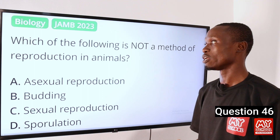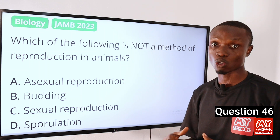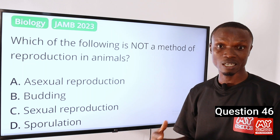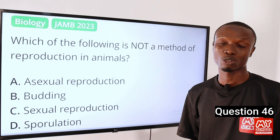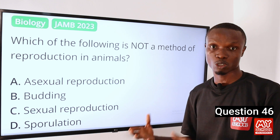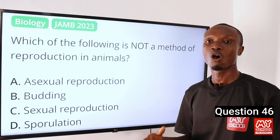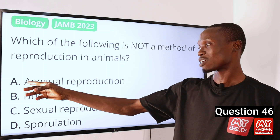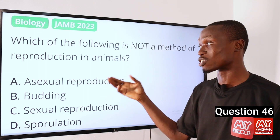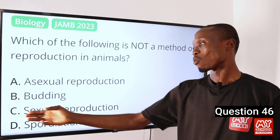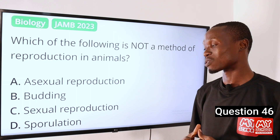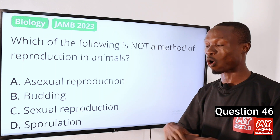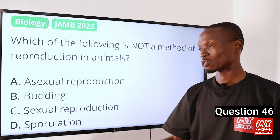The answer to this question is sporulation. Sporulation is a method of reproduction that is not common to animals — it is only common to some groups of organisms such as fungi and certain protists. Sporulation involves the formation and release of spores, which are specialized structures capable of developing into a new individual under suitable conditions. Asexual reproduction involves just a single parent, and budding is also a form of asexual reproduction, while sexual reproduction involves the fusion of gametes from two parents. So the answer is D — sporulation — which is not a common reproductive method among animals.